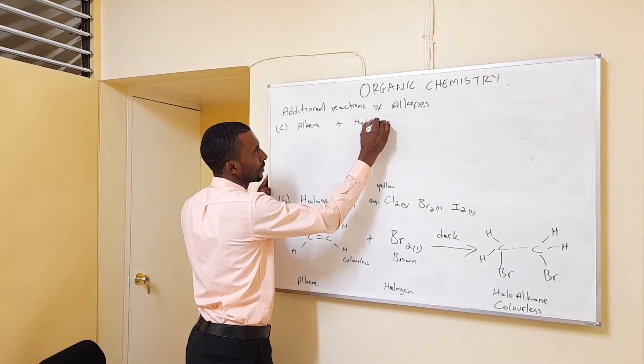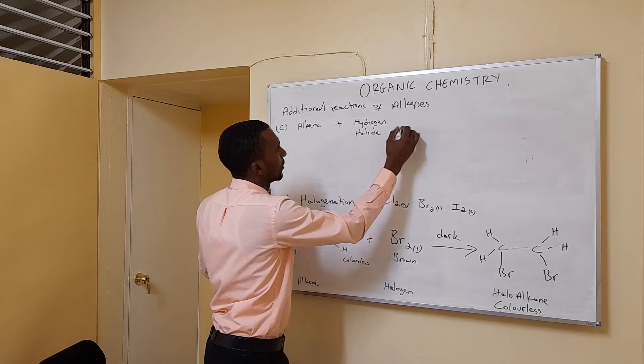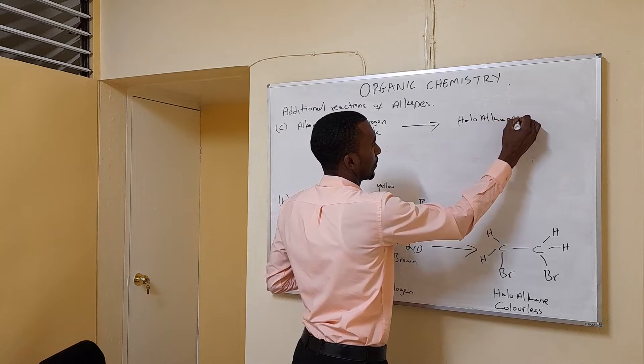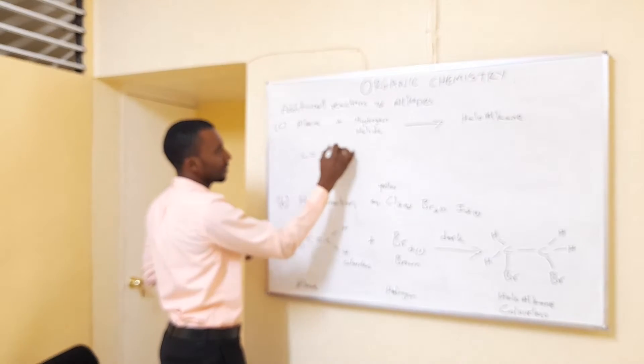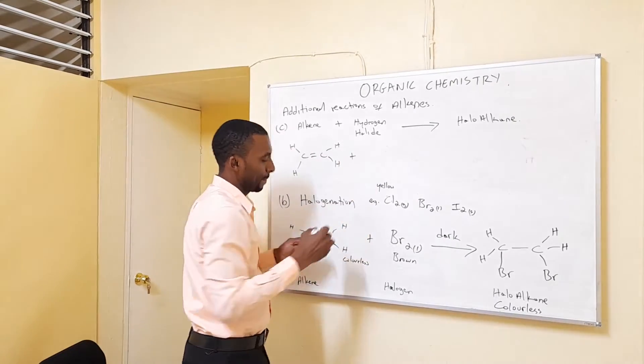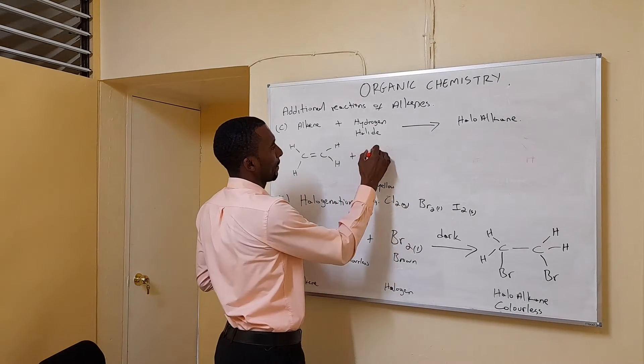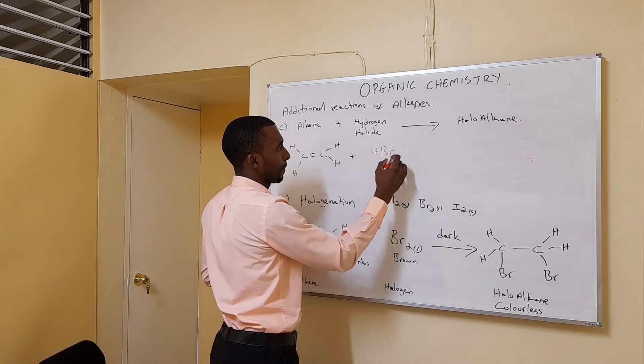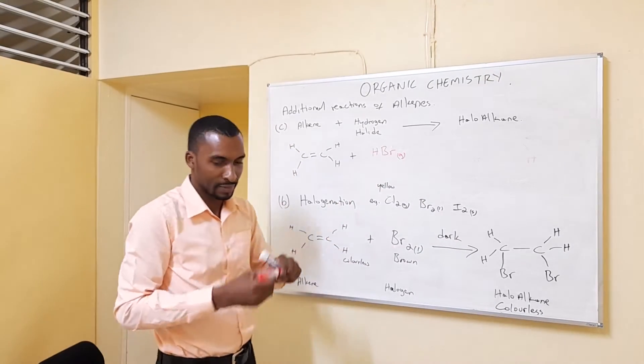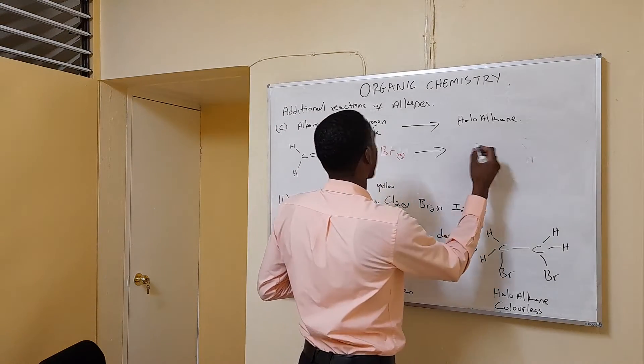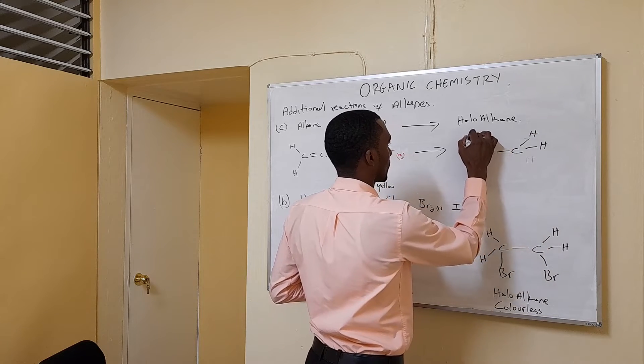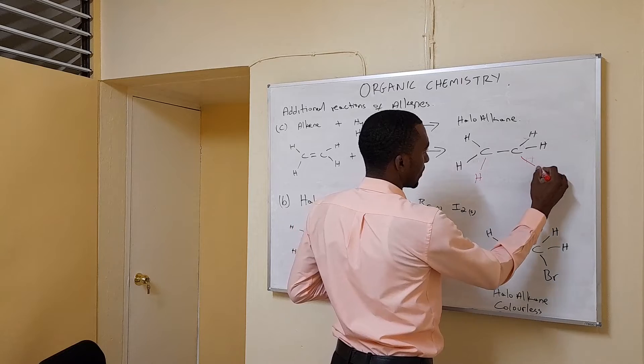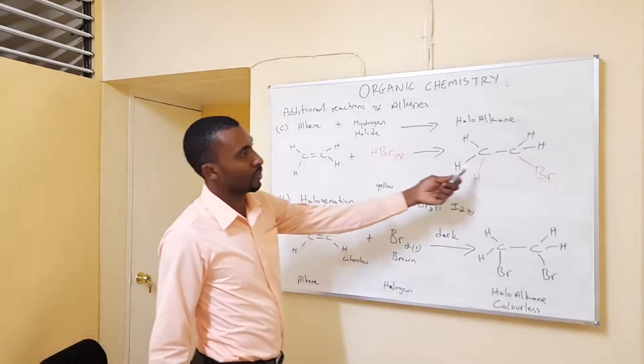Using ethene as an example, this will produce hydrogen bromoethane. So we'll have one of the hydrogens go there, bromine goes there. This is bromoethane.